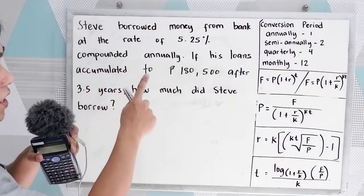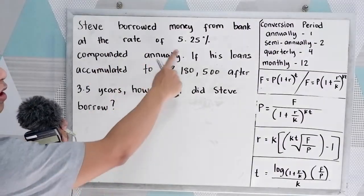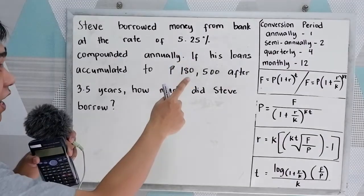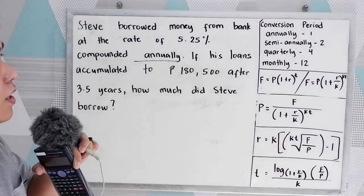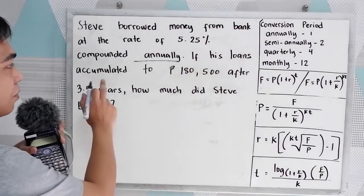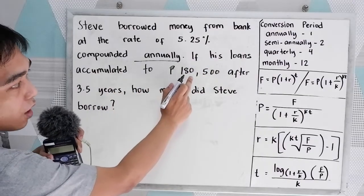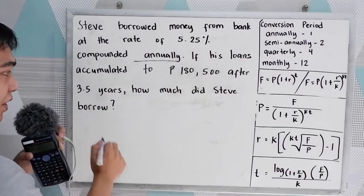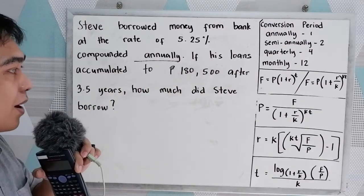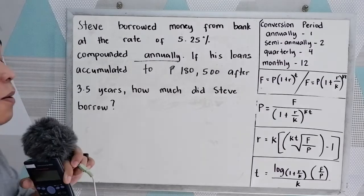Steve borrowed money from bank at the rate of 5.25% compounded annually. If his loans accumulated to 180,500 pesos after 3.5 years, how much did Steve borrow?